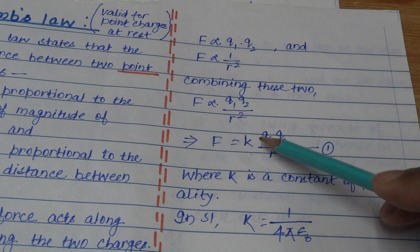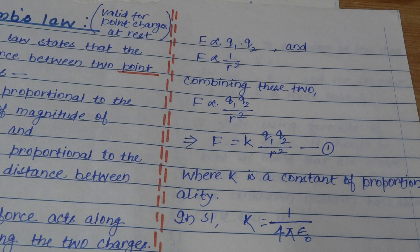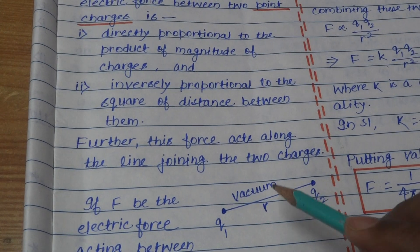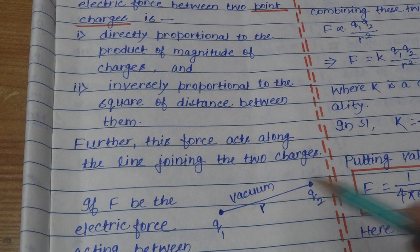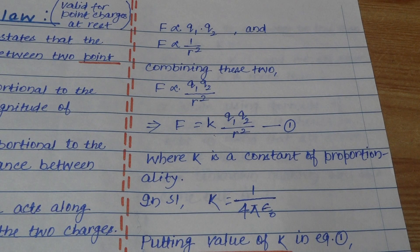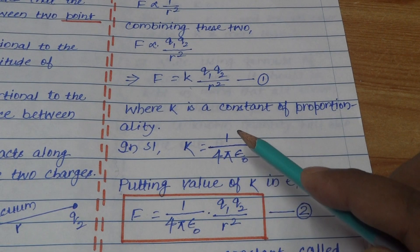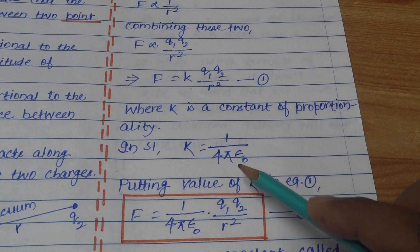The value of constant K depends on two factors: first, the nature of the medium between the two charges, and second, the system of units in which we are working. Since the medium is fixed here as vacuum, free space, or air, K will depend only on the system of units. In SI, K has the value 1 by 4 pi epsilon naught.